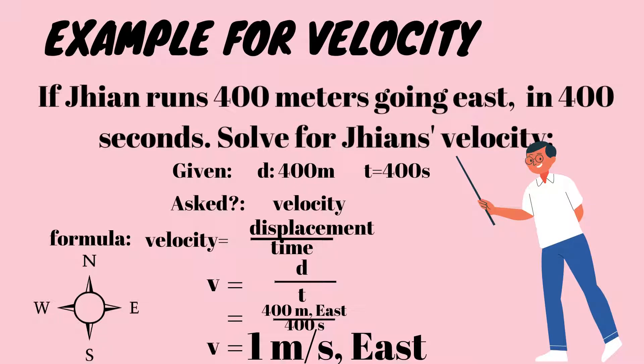Using the formula, velocity equals displacement over time: 400 meters east divided by 400 seconds. The answer is velocity equals 1 meter per second due east.